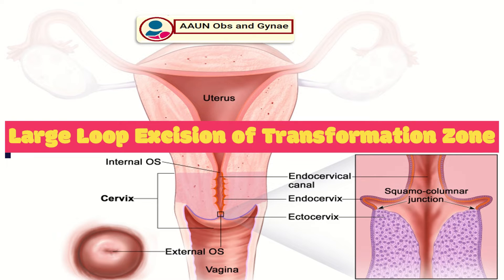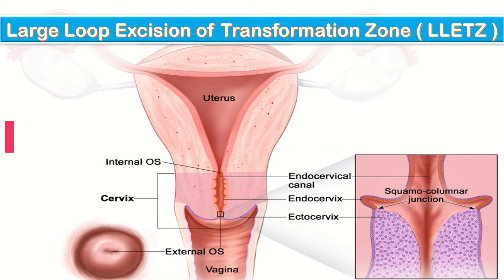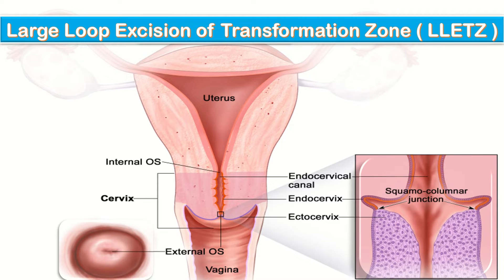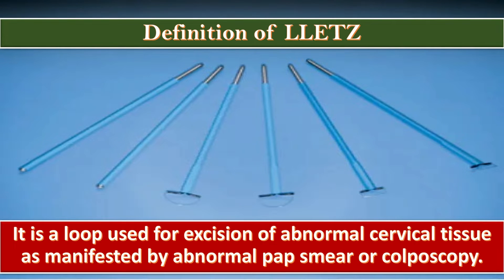Today we will talk about large loop excision of the transformation zone, which is a commonly performed procedure for cervical intraepithelial neoplasia and several other gynecological problems. It is a loop used for excision of abnormal cervical tissue as manifested by abnormal pap smear or colposcopy.